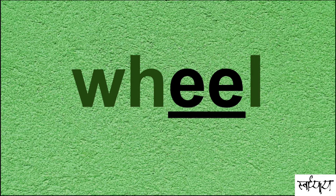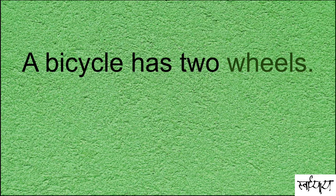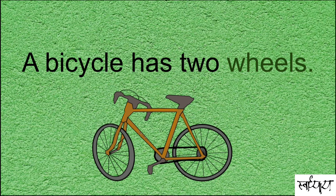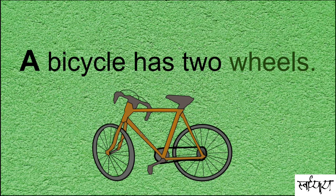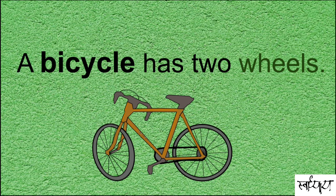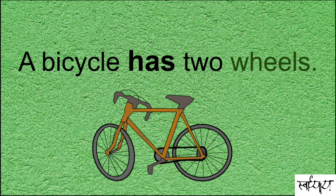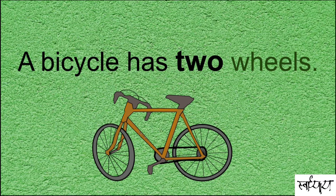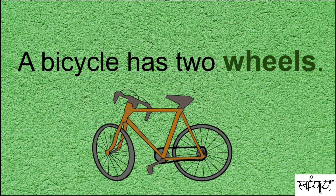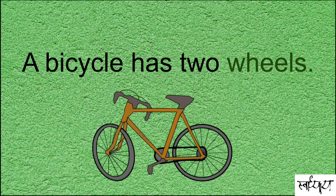Wheel. A. Bicycle. Has. Two. Wheels. A bicycle has two wheels. Let's repeat: a bicycle has two wheels.